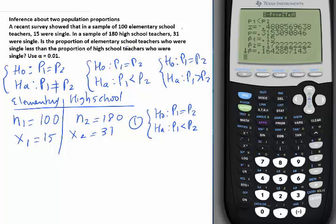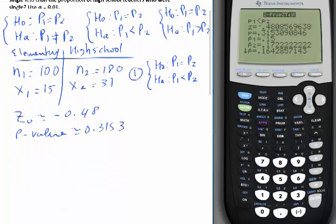Here is Z. In the book, he calls it Z zero. It's negative 0.481, or 48, if you like two digits. P-value. What is the P-value here? 0.3153.